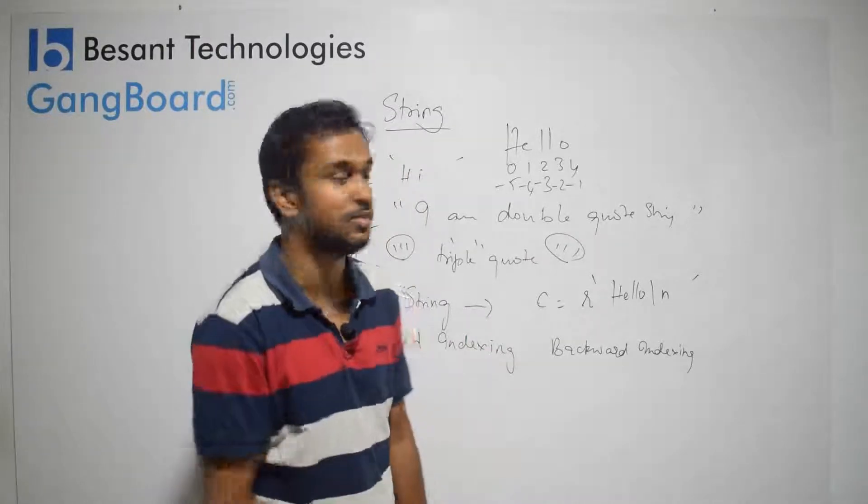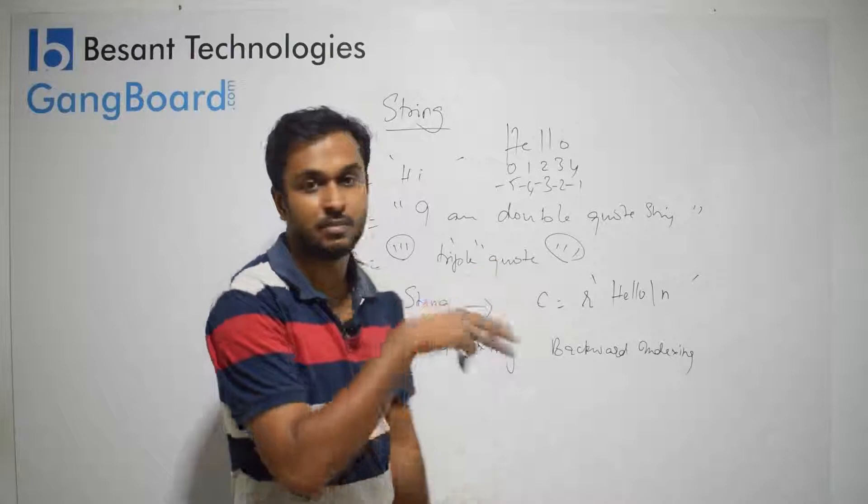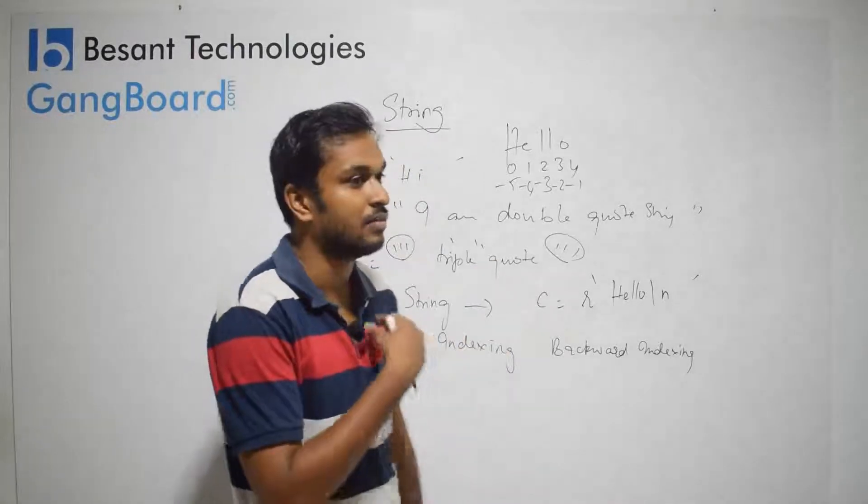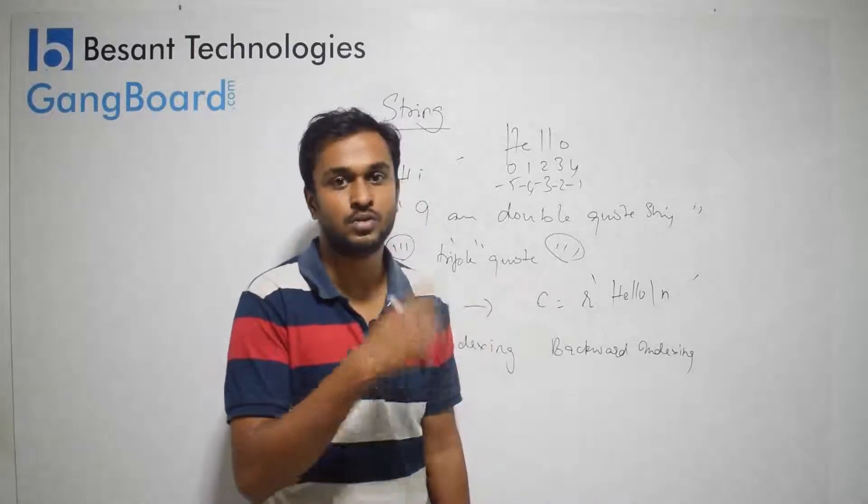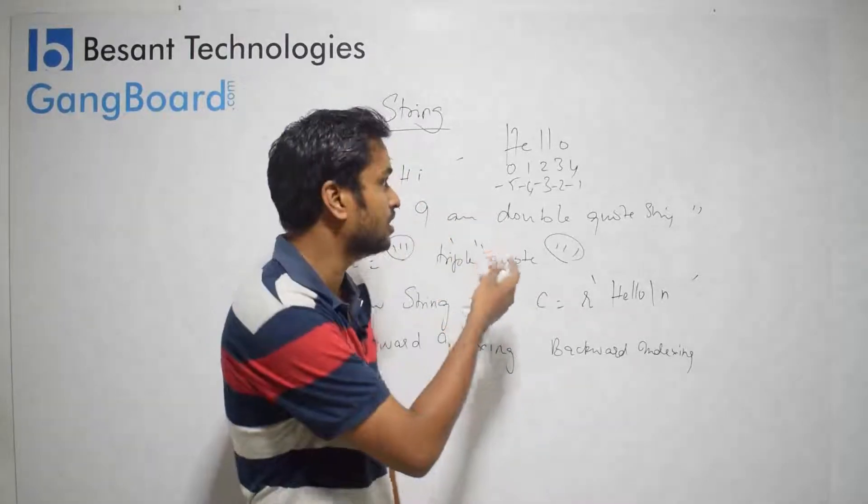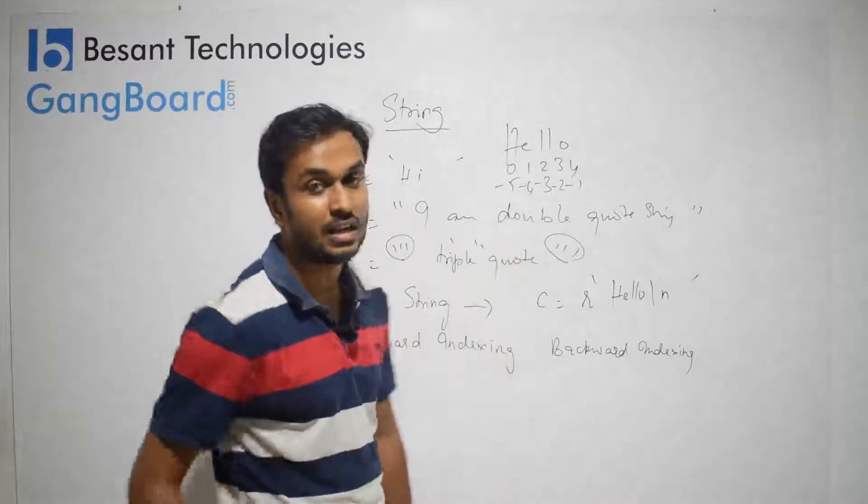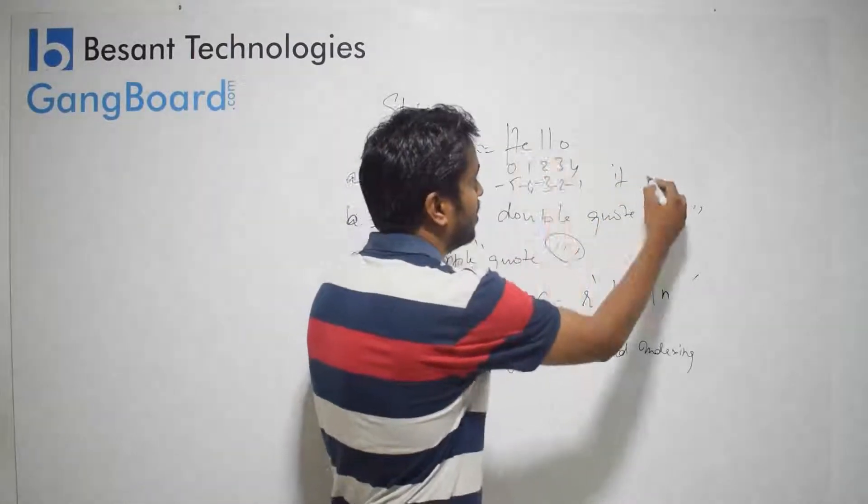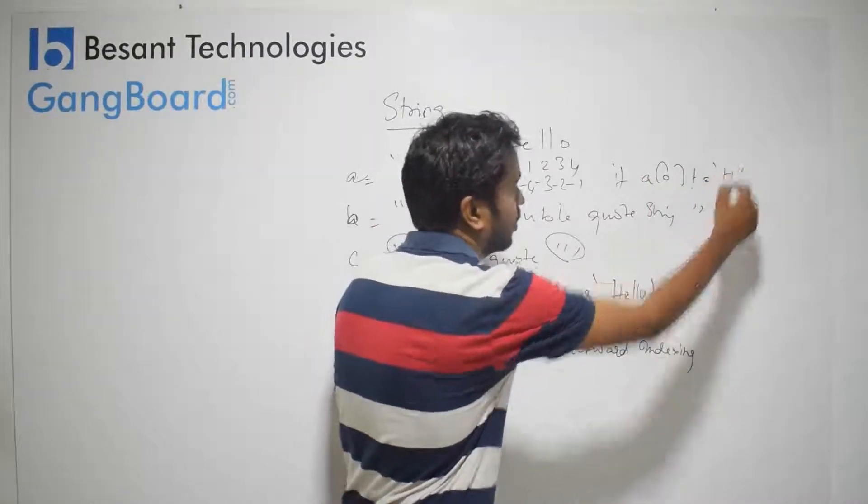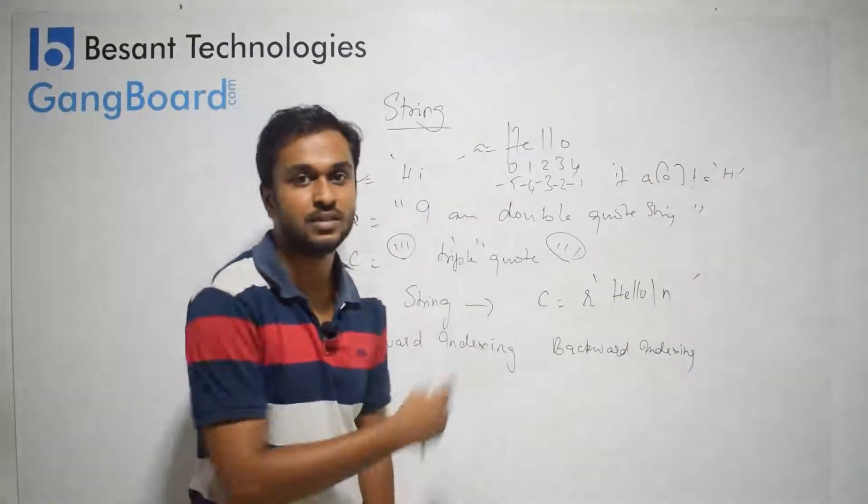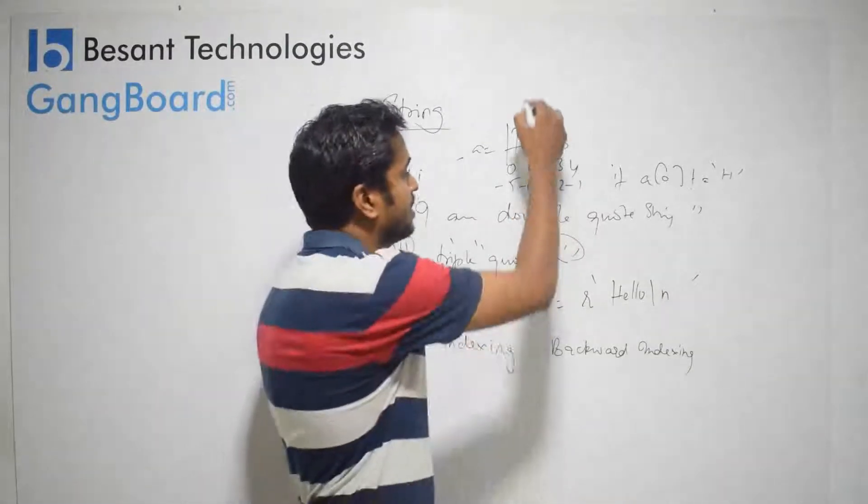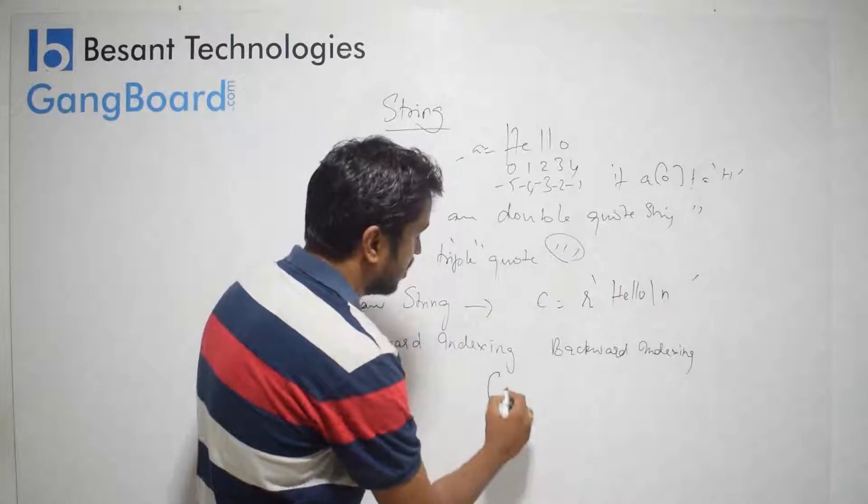The best example of a use case is password length, minimum 8 characters. You can check length. I don't want to allow a username that starts with a, h, something in a logical case. You can check with the condition if a equal to a of 0, not equal to H.